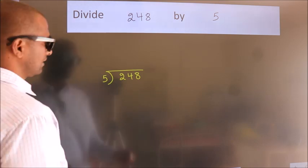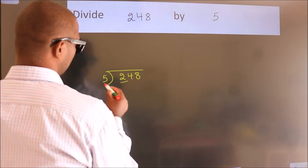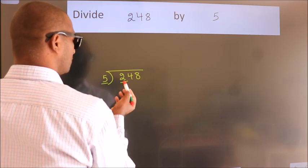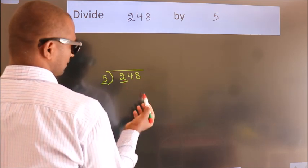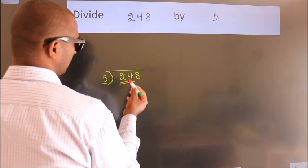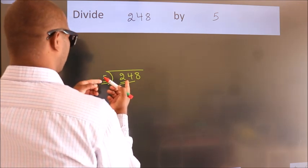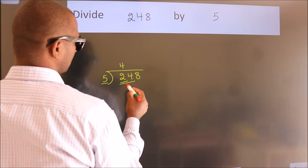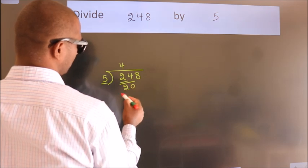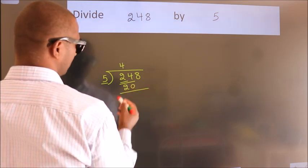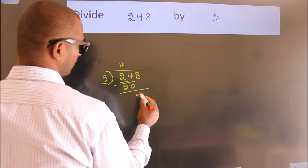Next, here we have 2, here 5. 2 is smaller than 5, so we should take 2 numbers: 24. A number close to 24 in the 5 table is 5 times 4 is 20. Now we should subtract. We get 4.